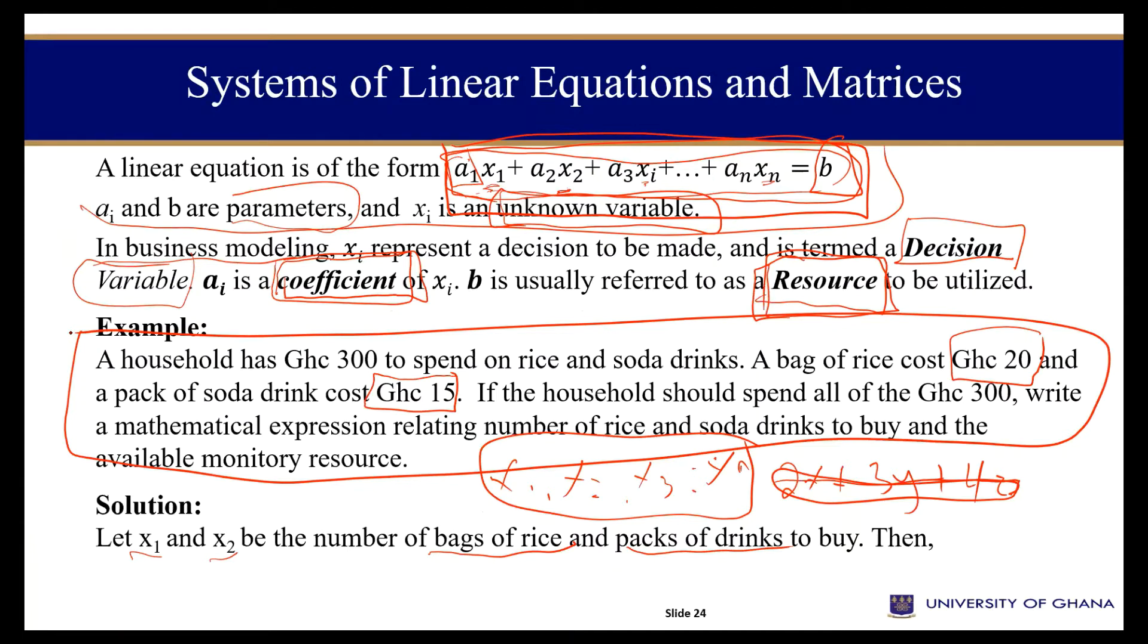You are told that you need a bag of rice for each rice that you want to buy. A cost is equal to 20. Then the pack of soda drinks, you are told a cost is 15 cedis. But you have to spend the 300 to buy these two items. Your concern is how do I distribute the 300 either evenly or whichever appropriation to be able to exhaust the 300 cedis? So the problem is how many should you buy for rice? How many should you buy for soda? That is a problem you have given the 300 Ghana cedis.